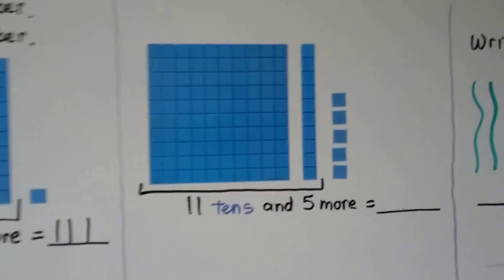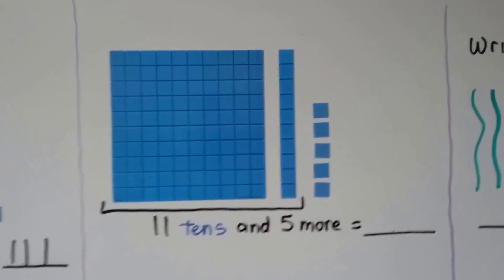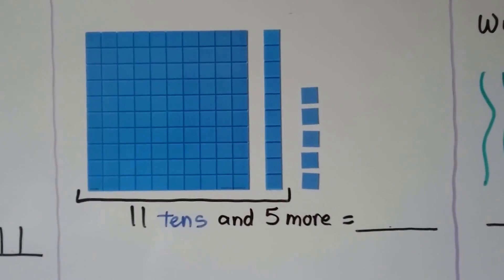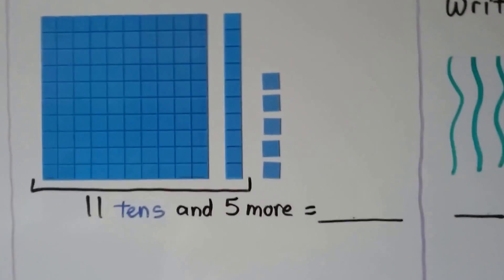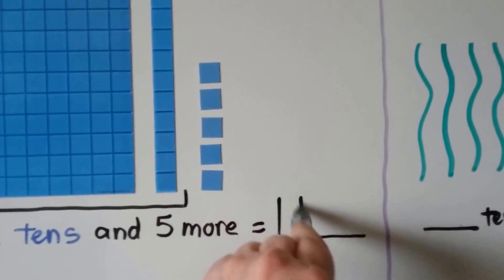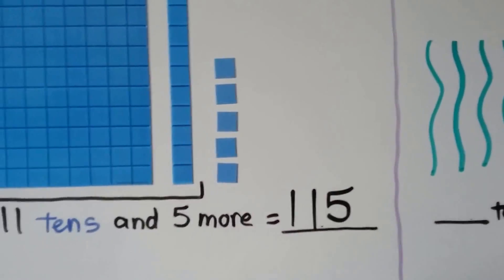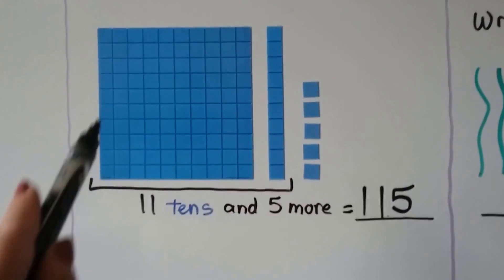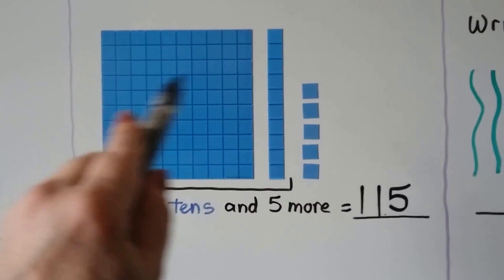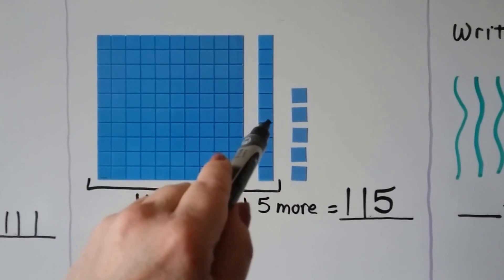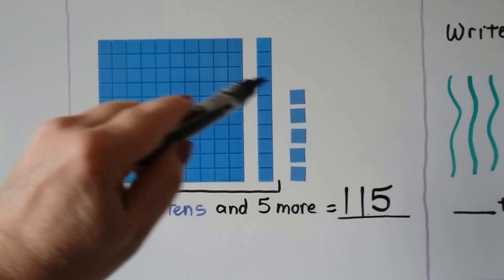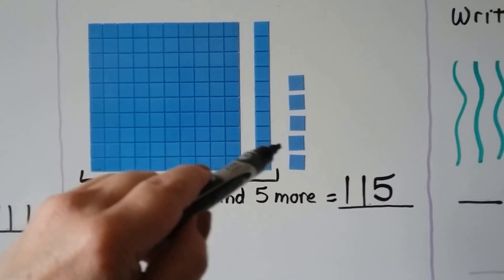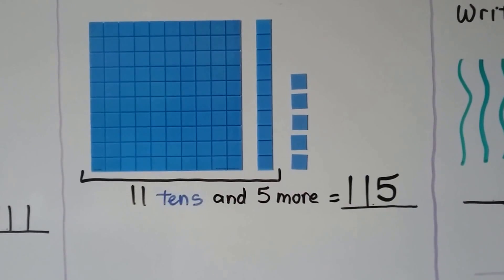Here we have 11 tens and 5 more. We have 115. We have 10 tens, which is 100. Then 111, 113, 114, 115.